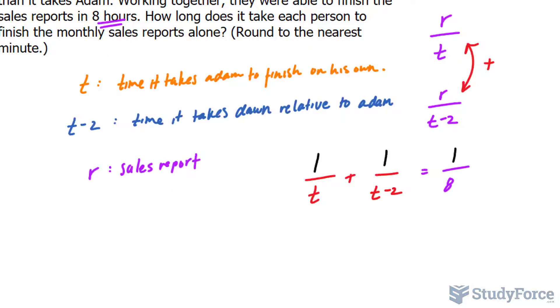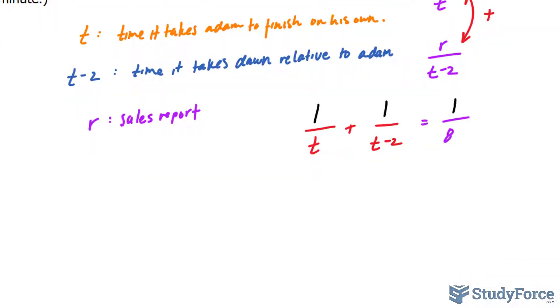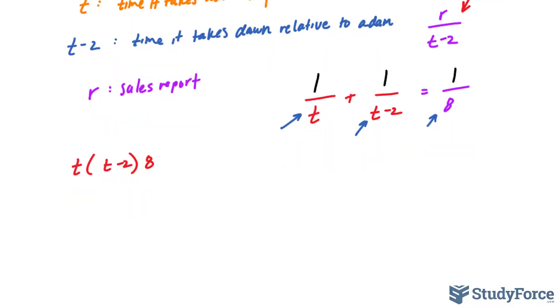Now we have to solve for t. To solve for t, we find a common denominator amongst all the three terms here. The common denominator is found simply by multiplying all three of the denominators together. So we have t(t minus two) times eight. Multiplying this term by that, we get t minus two times eight.